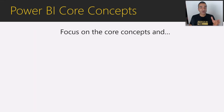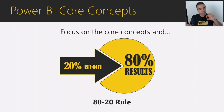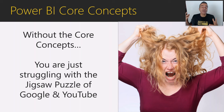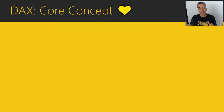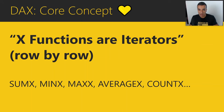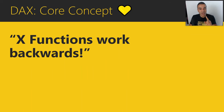These core concepts follow the classic 80-20 rule. If you put your effort on learning these core concepts, you'll be putting in 20% of the effort and getting 80% of the results. Without that, you're struggling with the jigsaw puzzle of Google and YouTube, which can be really frustrating. The first core concept: X functions are iterators — they go row by row. For each subcategory, for each customer — that's an X function. There's a whole family: SUMX, MINX, MAXX, AVERAGEX, COUNTX, and many more.